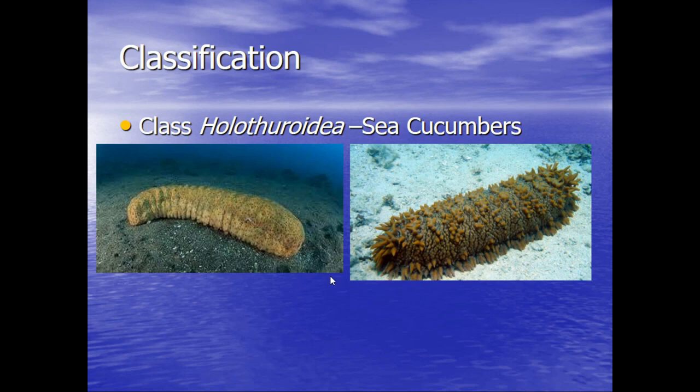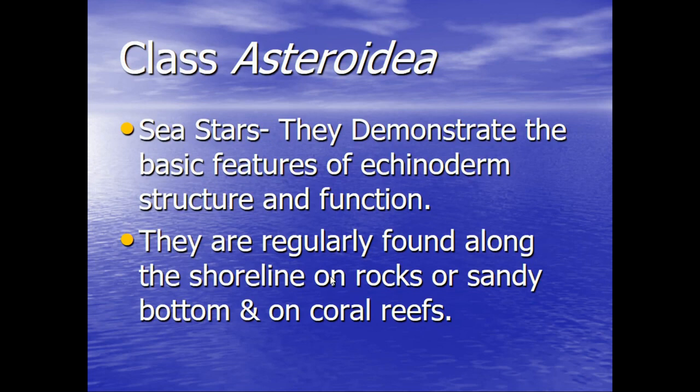And then the ever popular Holothuroidia. These are the sea cucumbers, and they are very slow moving decomposers that just trudge along on the bottom. You can see how they got their name — they have a very cucumber kind of shape.